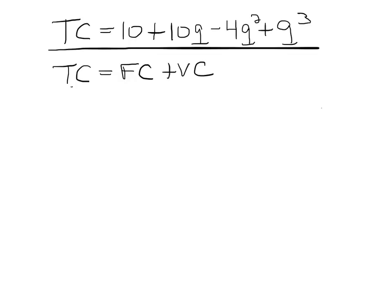So in this particular case, it's clear that the fixed costs are 10, because those are the costs that are not changing with output, and the variable costs are all the other part of the equation, which are the costs that are changing with output.